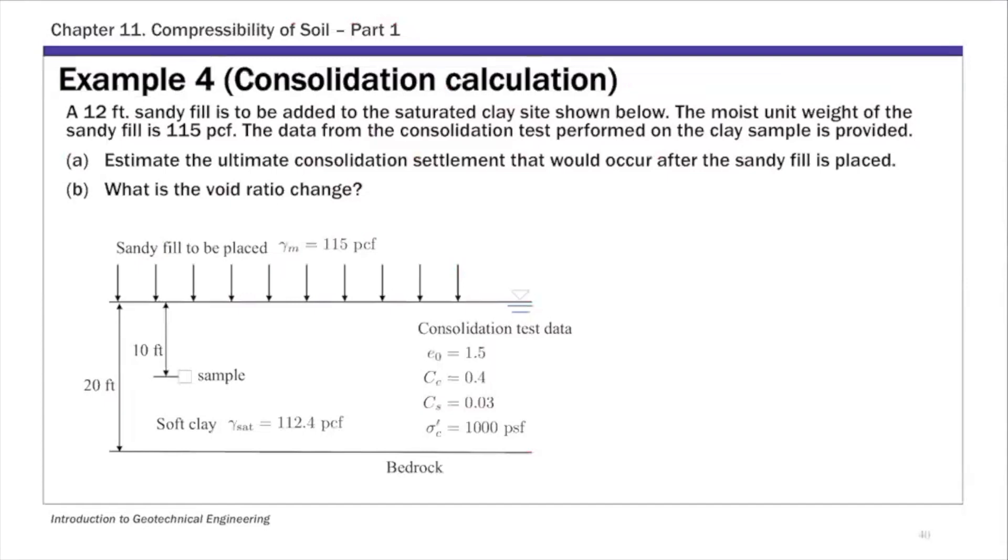For this next example, there are actually two parts that are closely related. You have 20 feet of clay with a different set of consolidation test data, so this is a different type of clay. We're going to put sandy fill on top as well, 12 feet of sandy fill. This problem has two parts: example four is part one and example five is part two.